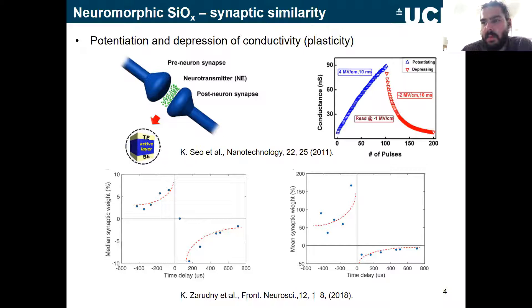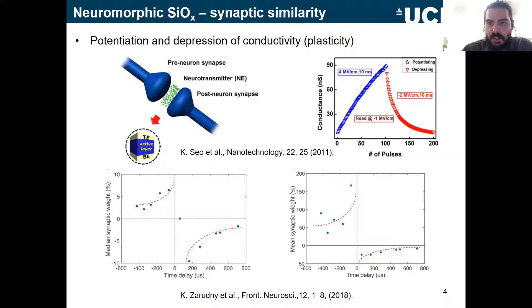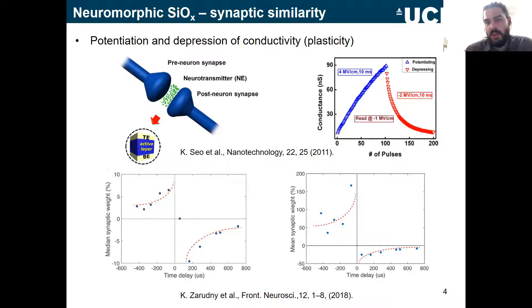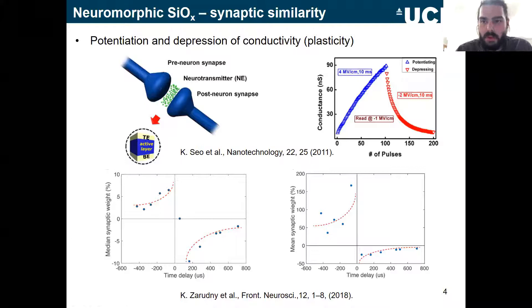The neuromorphic aspects of silicon suboxide include similarity to synapses and similarity to neurons. In terms of synapses, we can look at the potentiation and depression of conductivity — this is plasticity. Looking at conductivity as a function of the number of pulses applied to a synapse, as you pulse with an input current you get a gradual increase and then depression of conductivity.